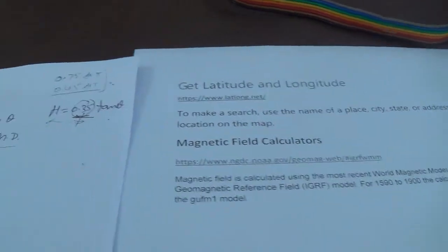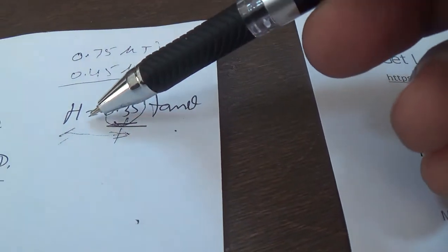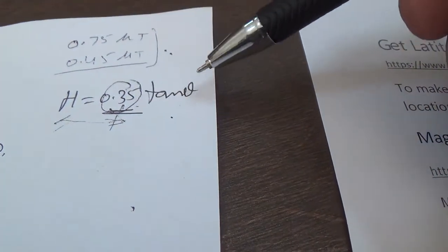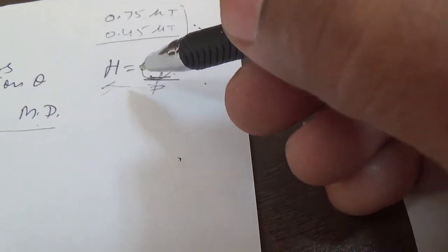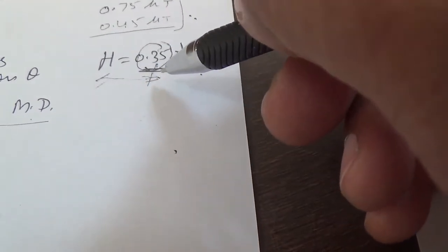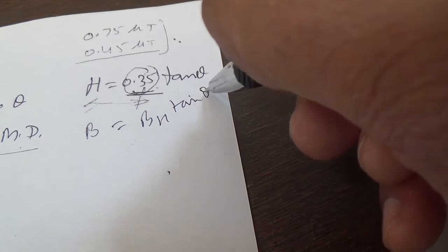So when we use bar magnets, actually we use this formula: B is equal to BH tan theta. Some books write H, some books write BH like this: B is equal to BH tan theta.